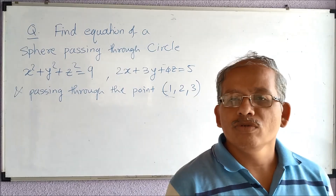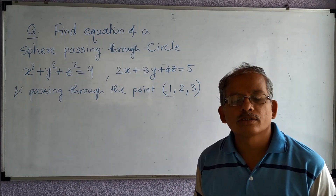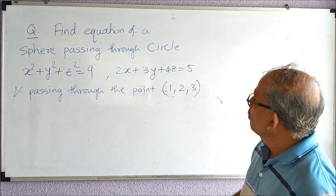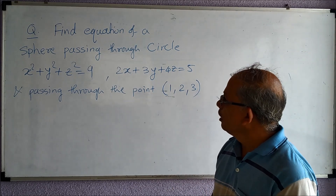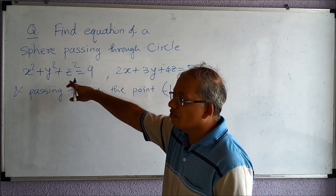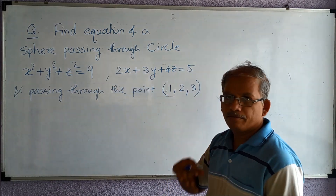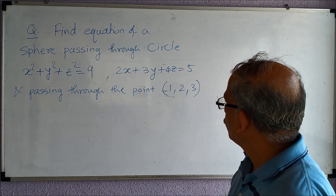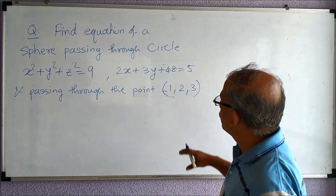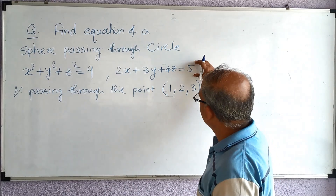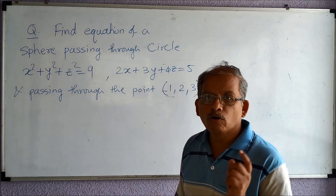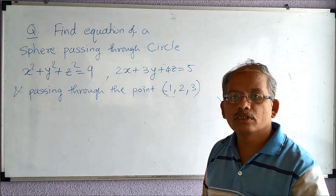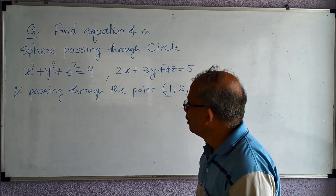Hello friends, now let us take one illustration of a sphere passing through a circle. The problem is: find the equation of a sphere passing through a circle. The circle is given as the intersection of a sphere and a plane. There is a family of spheres passing through this particular circle, but we want to find a particular sphere which also passes through a given point.